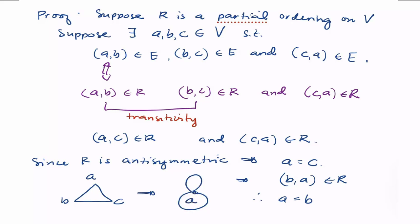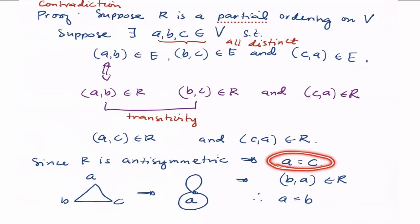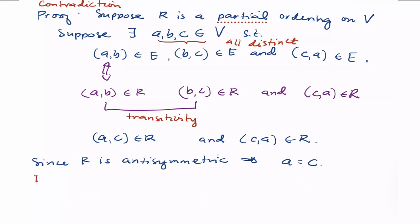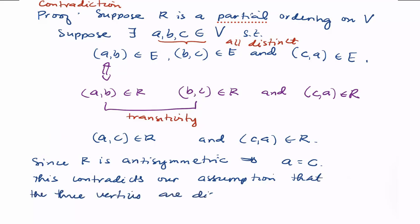So this is the direct proof. For the proof by contradiction: suppose R is a partial ordering on V, and there exist A, B, C with all distinct. Since they are distinct, we are sure we really have a triangle. But we showed A equals C, which is a contradiction of our initial assumption that they are distinct. This contradicts our assumption that the three vertices are distinct. Therefore, there are no closed paths in our graph.